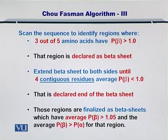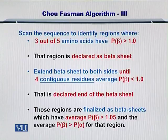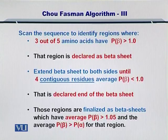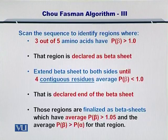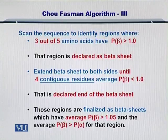That marks the end of your beta sheet, and those regions are finalized as beta sheets which have an average propensity for formation of a beta sheet greater than 1. From those regions where you have declared the beta sheet, you calculate the average propensity for all of those amino acids for formation of a beta sheet, and if the overall propensity comes out to be more than 1.05, then you finalize those regions as beta sheets. The second condition is that this propensity should be greater than the propensity of those amino acids to make an alpha helix. These are two necessary conditions to finalize a beta sheet.